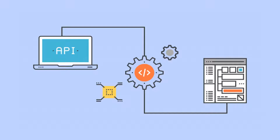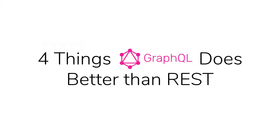Therefore, the answer to the question of this piece — is GraphQL the end of REST-style APIs? — is quite simple: yes. Using GraphQL is the end of REST-style APIs as we know it, specifically through the extension of base functionality and a reconsideration of data relations and functions. Now that we've seen the issues with REST, how, exactly, does GraphQL solve them?